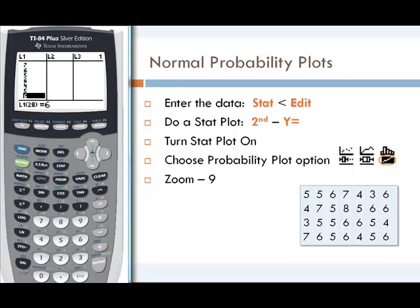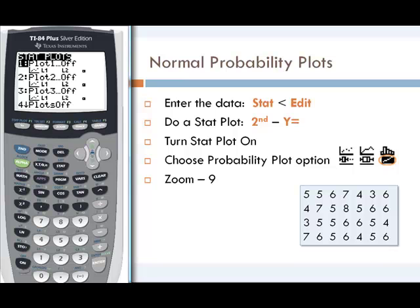Once your data is entered, then we'll do the STAT PLOT. We need to turn the STAT PLOT on and we'll also need to select the probability plot option. To turn the STAT PLOT on and view STAT PLOTs, we use 2nd and then the Y equals key, which above that it does say STAT PLOT. All of our STAT PLOTs are currently off. We're going to turn the first STAT PLOT on and select ENTER to edit that first STAT PLOT.